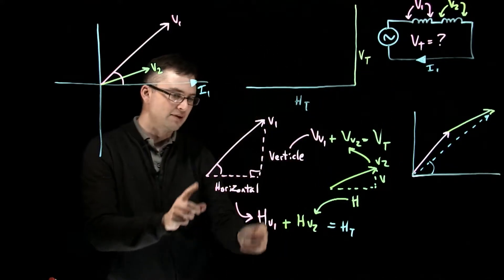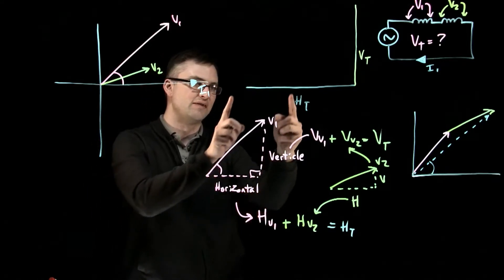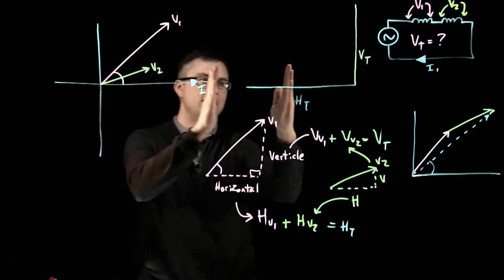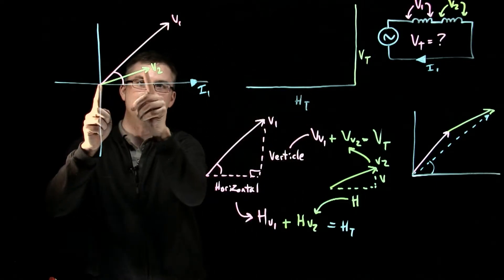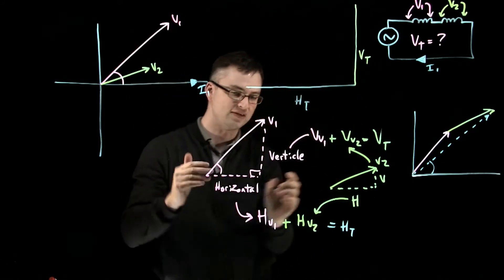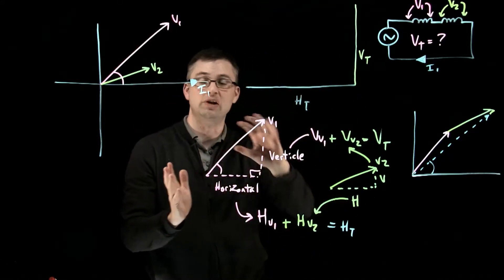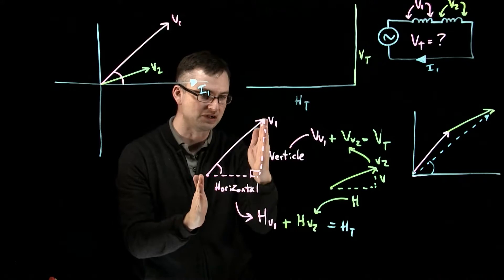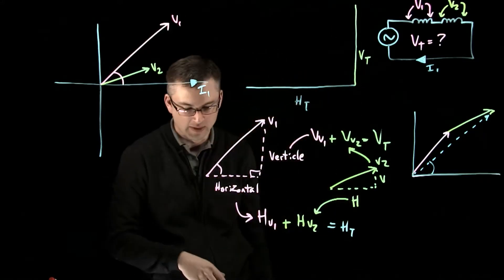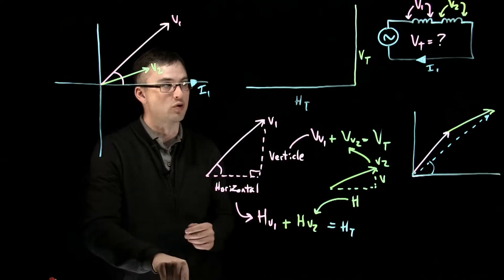So just to kind of recap, I've taken the horizontal of this one and I've added it here, which means I've taken the horizontal of this and I've added it onto here. And I've taken the horizontal of this and I've added it onto there. And I have my horizontal total for both of those phasors. And all I did was convert them into right angle triangles, solve for each side, and I get the numerical values and I can add them up.